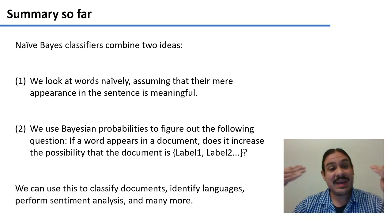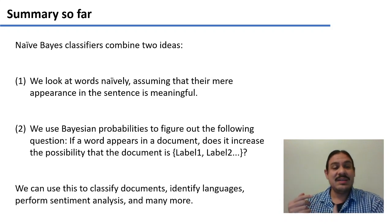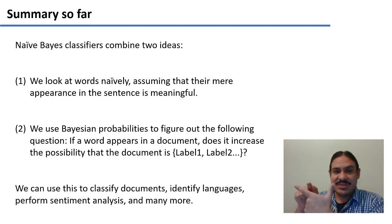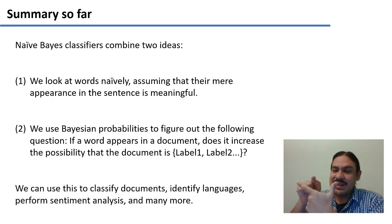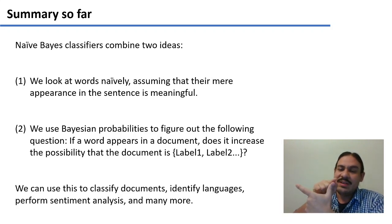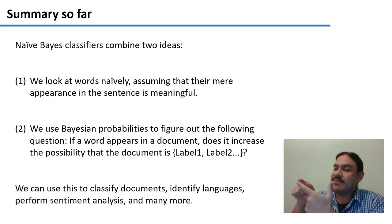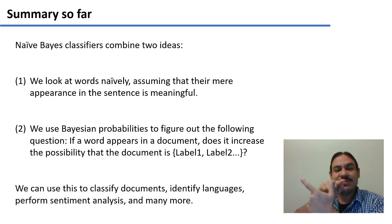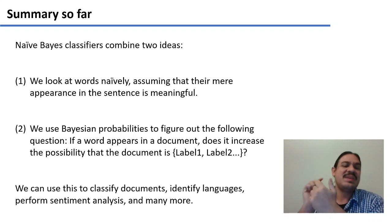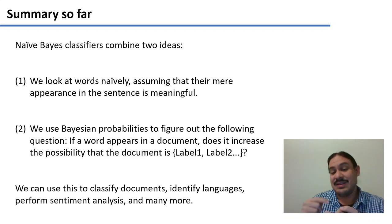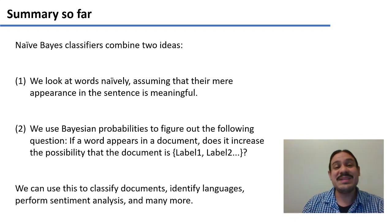So we're going to have our n-gram counts, and then we're going to use Bayesian probabilities to figure out if the presence of a certain n-gram — for example, the word 'greatest' in a movie review — increases the probability of a document being a positive movie review. So we have vectors of features for our training items, and then we have labels for what they should be. With this, we can classify documents for whether they belong to sports or not, we can identify languages, we can perform sentiment analysis, and we can do a lot of classification.